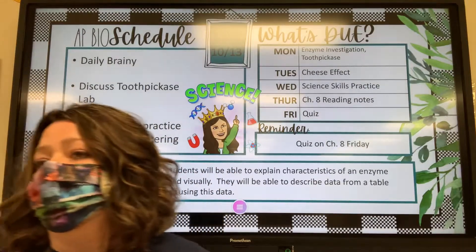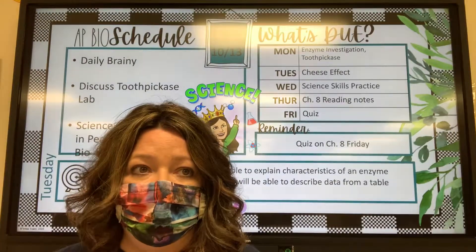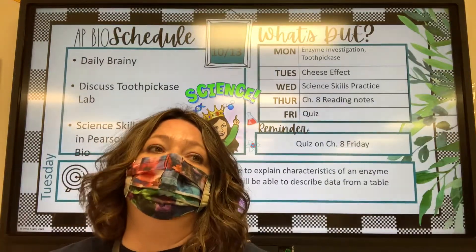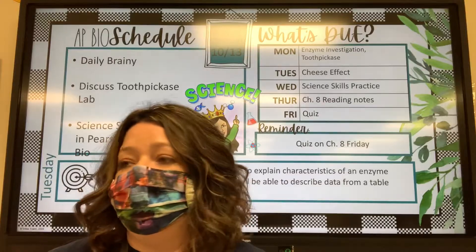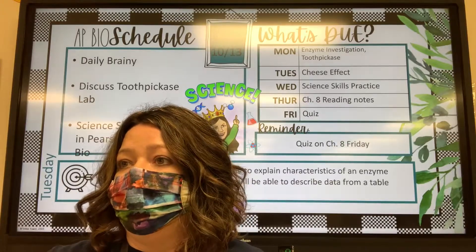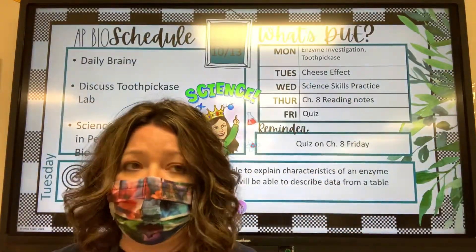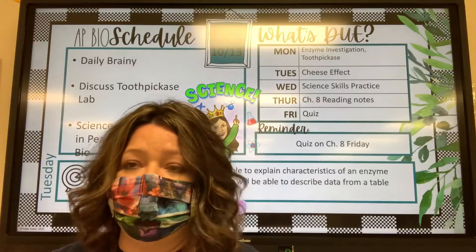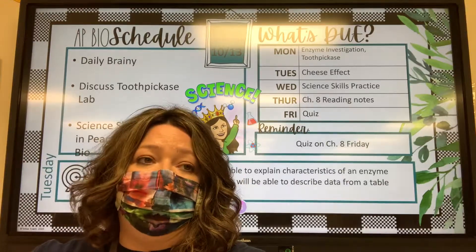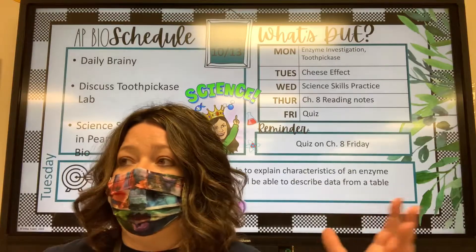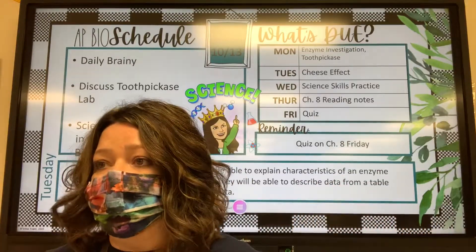That's one way an enzyme will regulate itself. If you have a surplus of products around, it'll slow down the rate of the enzyme so that the enzyme doesn't go out of control building more and more product that the cell doesn't need. So that's one way of feedback inhibition — meaning I've got too much product here, so I'm going to slow down now.